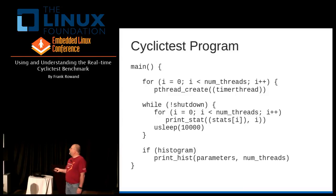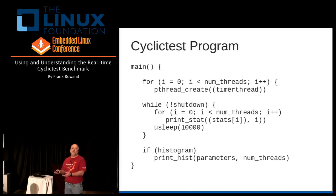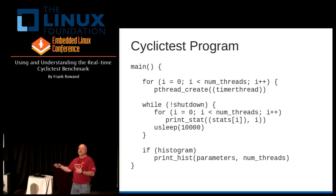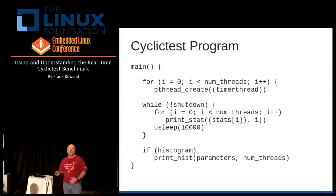Once we've created all the threads, we just start spinning. Optionally, once every 10,000 microseconds, we might want to print out the current updated statistics. Once we've decided to shut down for whatever reason — we might have run a certain number of predetermined loops, or run for a certain time duration — then we shut down the threads and optionally print out the accumulated data, for instance the histogram data. So overall, that's the entire program, very simple again.